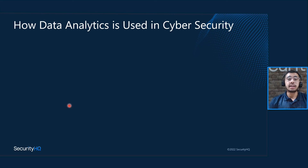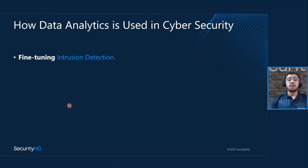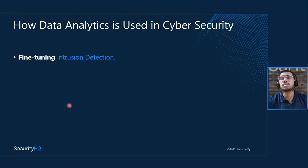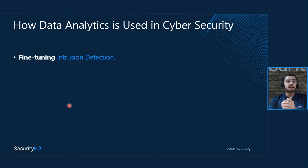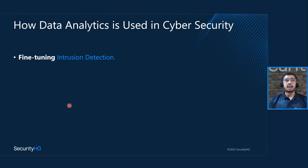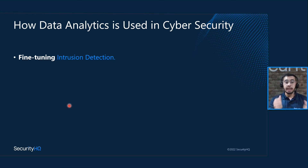What can we achieve by coupling data analytics with cybersecurity? First is fine-tuning the intrusion detection system. The current intrusion detection and protection system can be fine-tuned by analyzing existing data and logs, which can anticipate worms, viruses, malwares, and cyber attacks. These predictions can be leveraged to fine-tune the detection system and help strengthen the cybersecurity system.